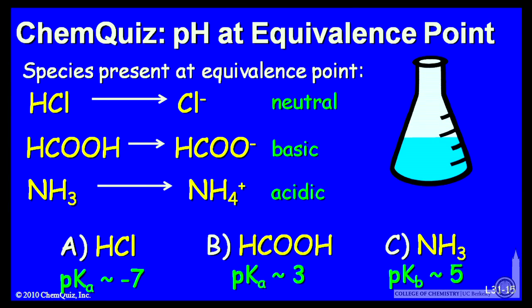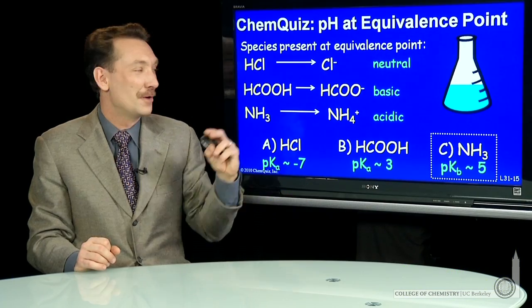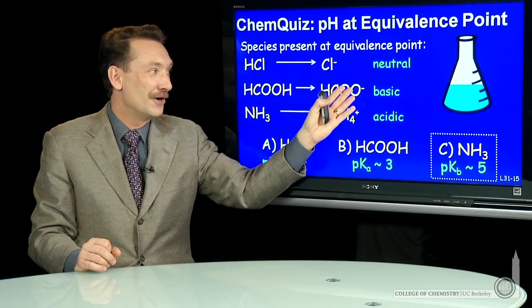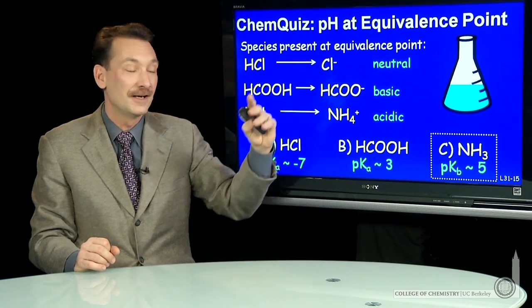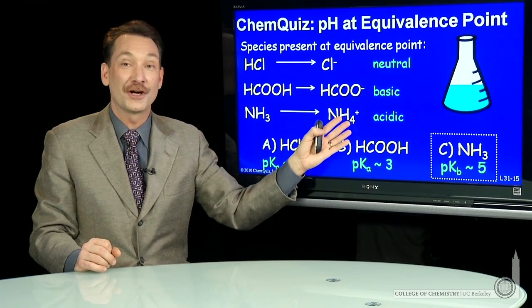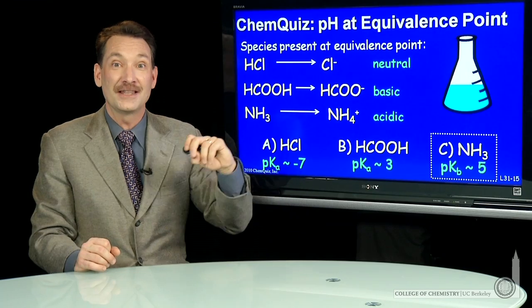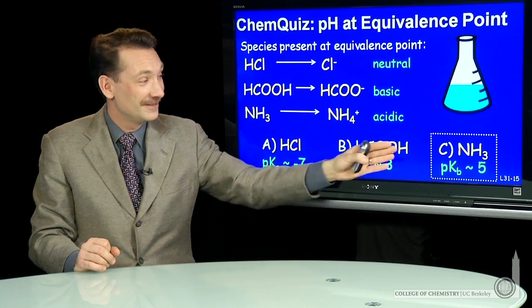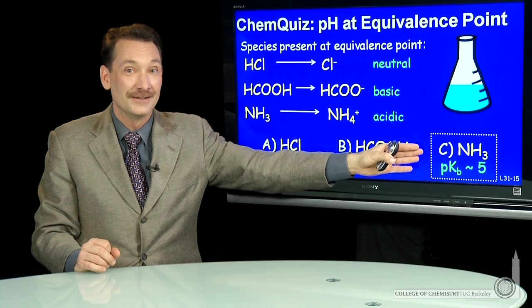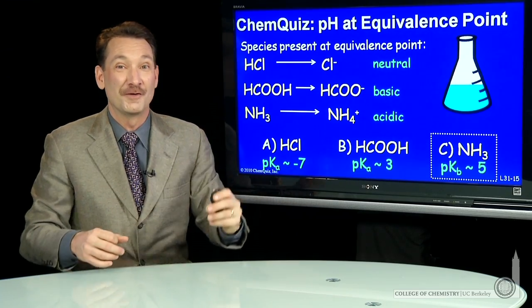So which has a pH that's less than 7, that's slightly acidic at equivalence point? Well, it's the solution of the weak base. So weak acids are converted into their conjugate bases, making the equivalence point pH basic. Weak bases are converted into their conjugate acids, making the equivalence point slightly acidic. In this case, ammonia has an acidic equivalence point.